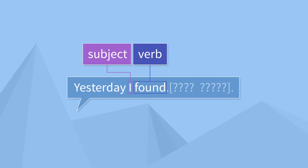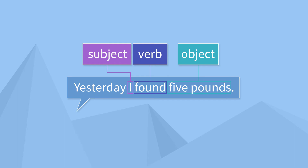So now we know that we need an object. What is an object? An object is what the action or state is done to. So for example, the verb is 'found' — who found? I found, so the subject is 'I.' What did I find? That would be our object. If we update the sentence to 'I found five pounds,' the action of finding is done to the five pounds, so the object is 'five pounds.' When we have a transitive verb such as 'found,' we must have an object — the part of the sentence that the verb is done to.